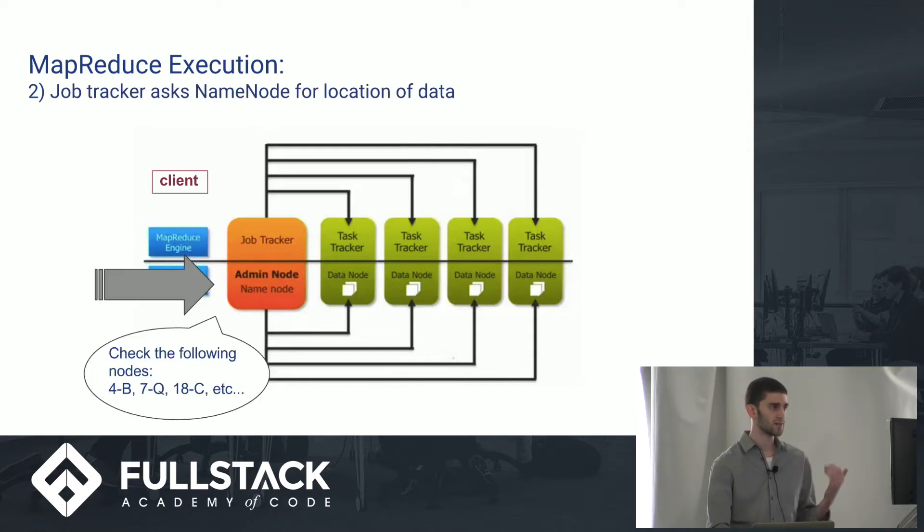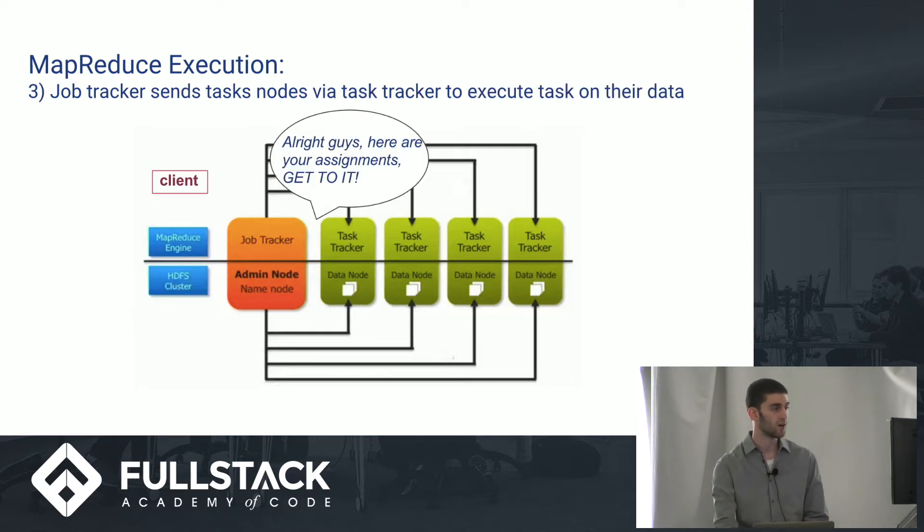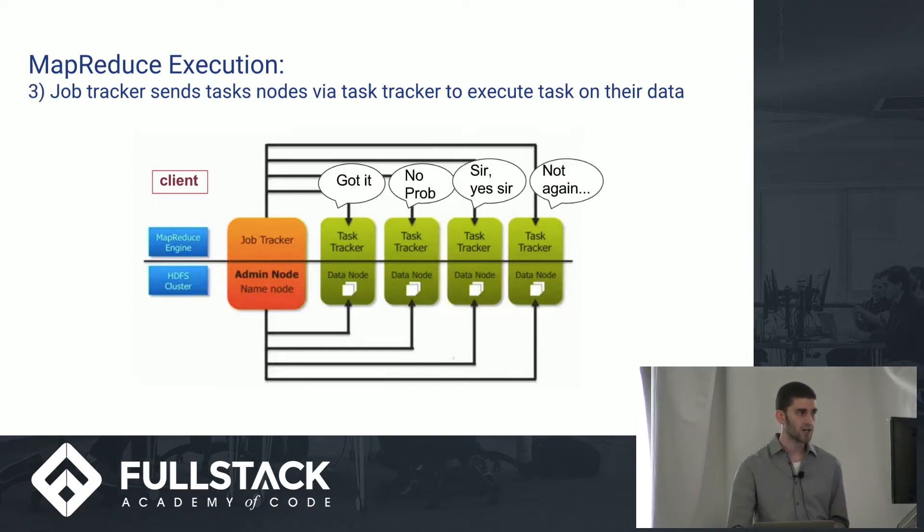And then the name node's going to be like, all right, in this location, these servers, check it out. It's like, all right, awesome. Now, the job tracker says, all right, get to it. He sends, via a task tracker, to the data nodes, a job assignment. They all get it. They understand what they have to do.